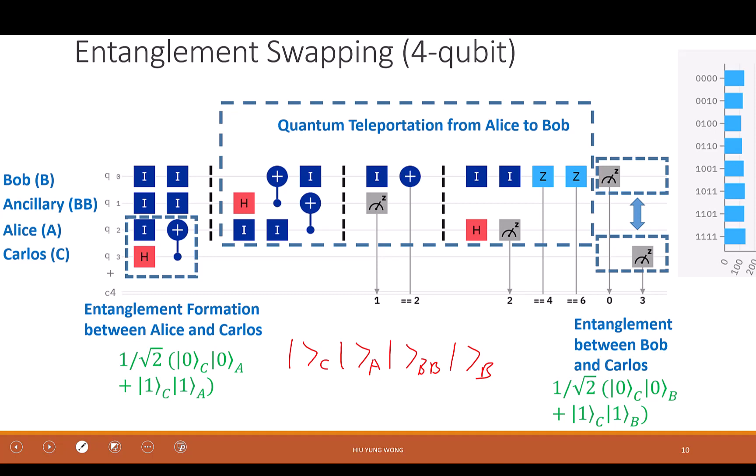It cannot because you have done measurement here. So they need to record this. So you need to figure out yourself and now try to take a look. So when Carlos is all 0, Bob is all 0. When Carlos is all 1, Bob is also all 1. They are entangled. And we really don't care what happened to BB and A. They are out of picture.